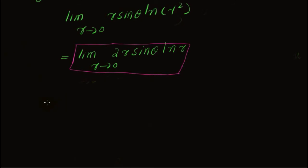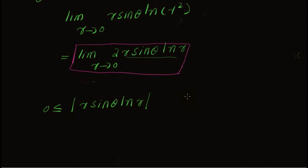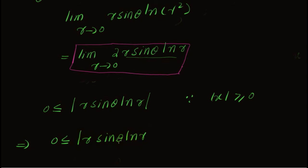Now consider this portion of the function, excluding the constant. Since the modulus of any number is greater than or equal to 0, we can write: 0 is less than or equal to |r sin theta log r|. Using the property |AB| = |A||B|, this equals |sin theta| times |r log r|, which is less than or equal to |r log r|, since |sin theta| is less than or equal to 1.